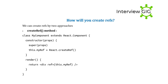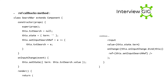How will you create refs? We can create refs by two approaches. First, using the createRef method: class MyComponent extends React.Component { constructor(props) { super(props); this.myRef = React.createRef(); } }. Second, using ref callbacks: class SearchBar extends Component { constructor(props) { super(props); this.txtSearch = null; this.setInputSearchRef = (e) => { this.txtSearch = e; }; } onInputChange() { this.setState(...); } render() { return <input onChange={...} ref={this.setInputSearchRef} />; } }